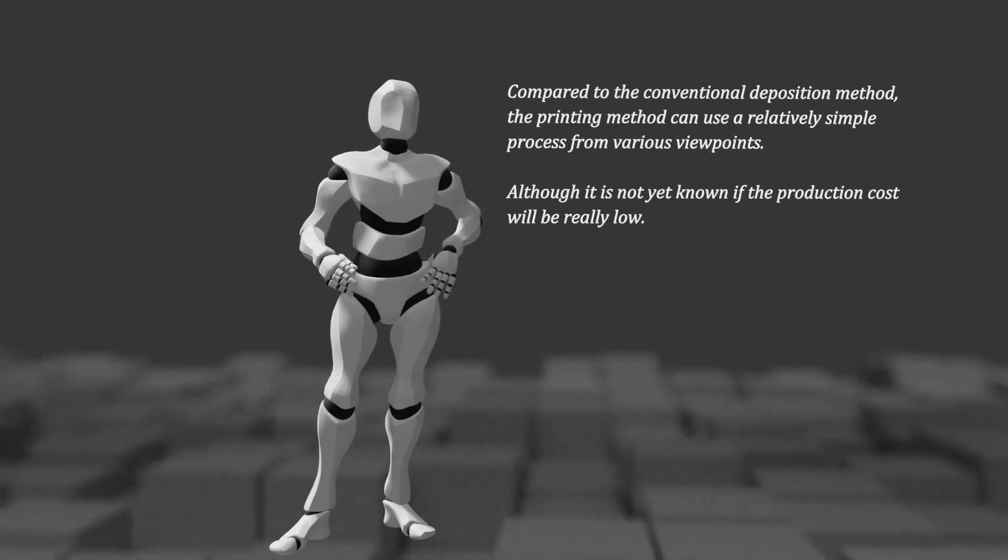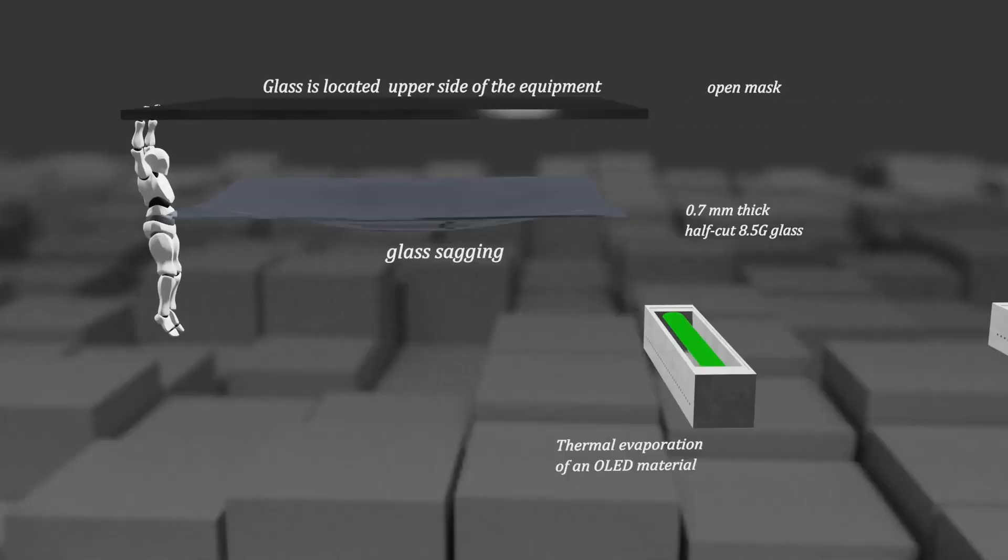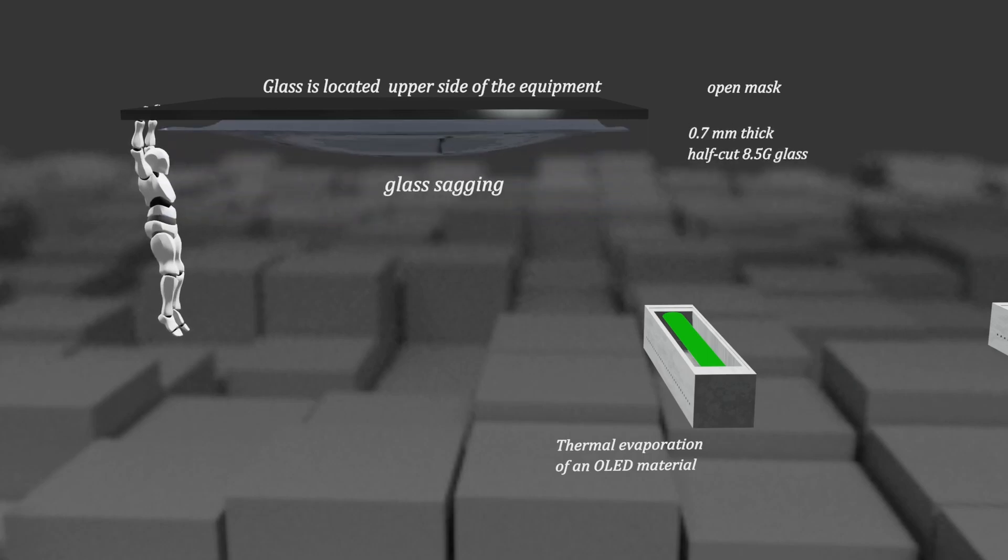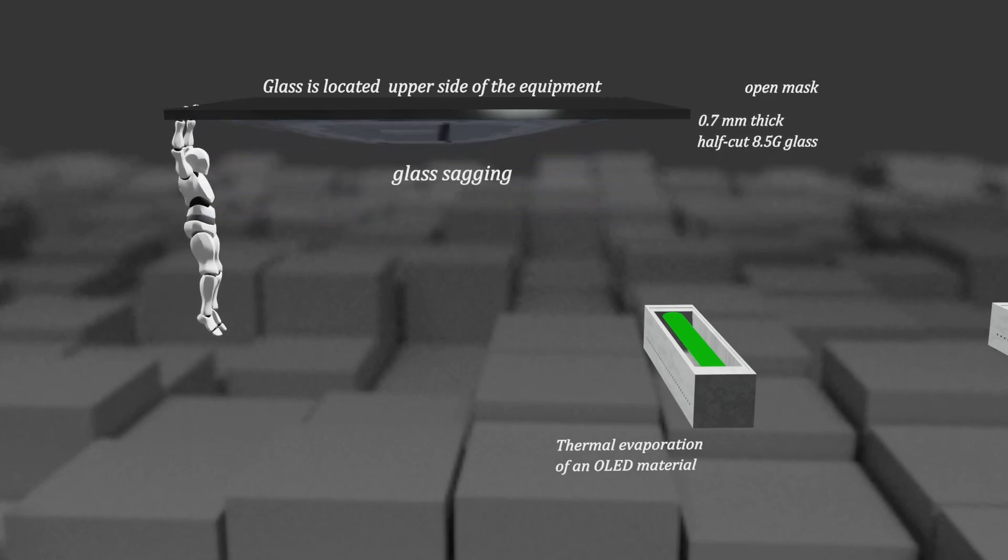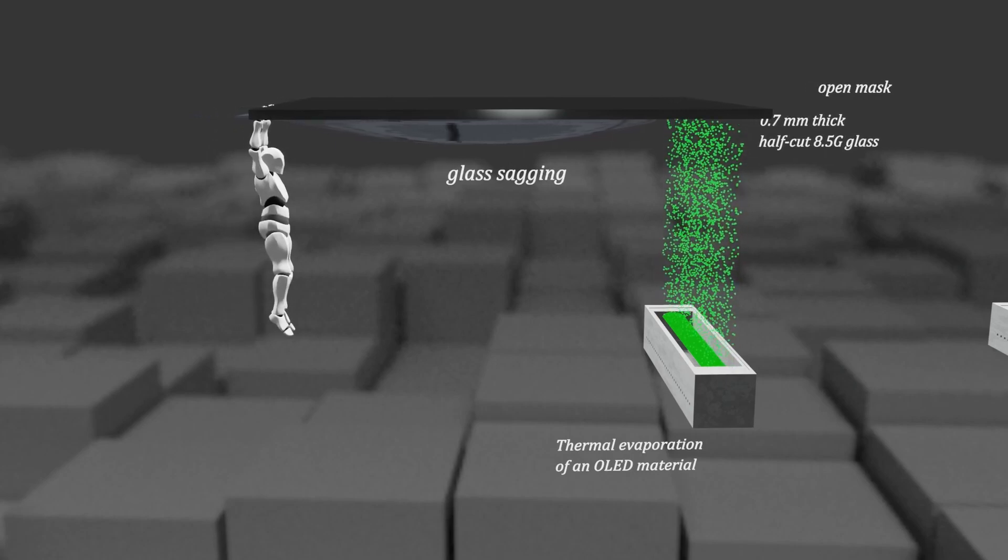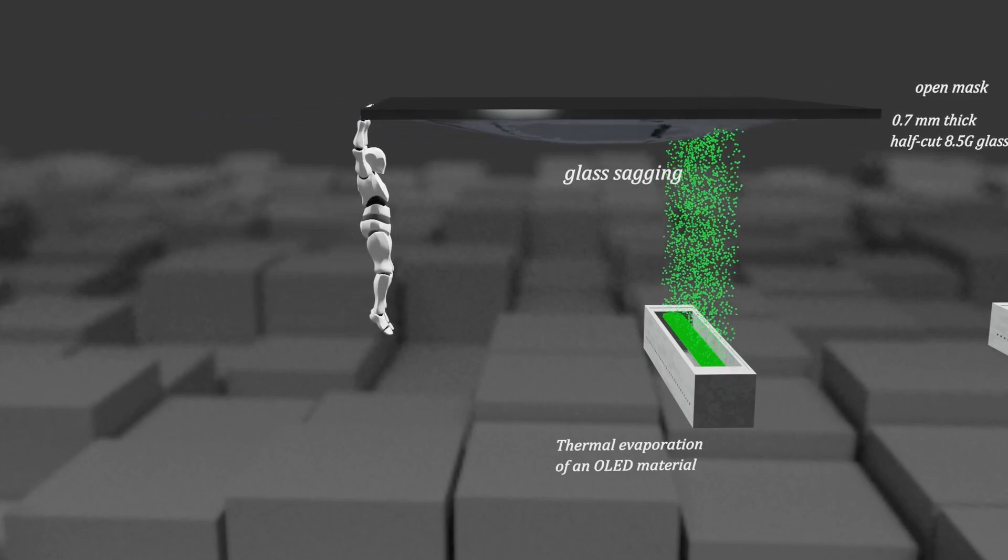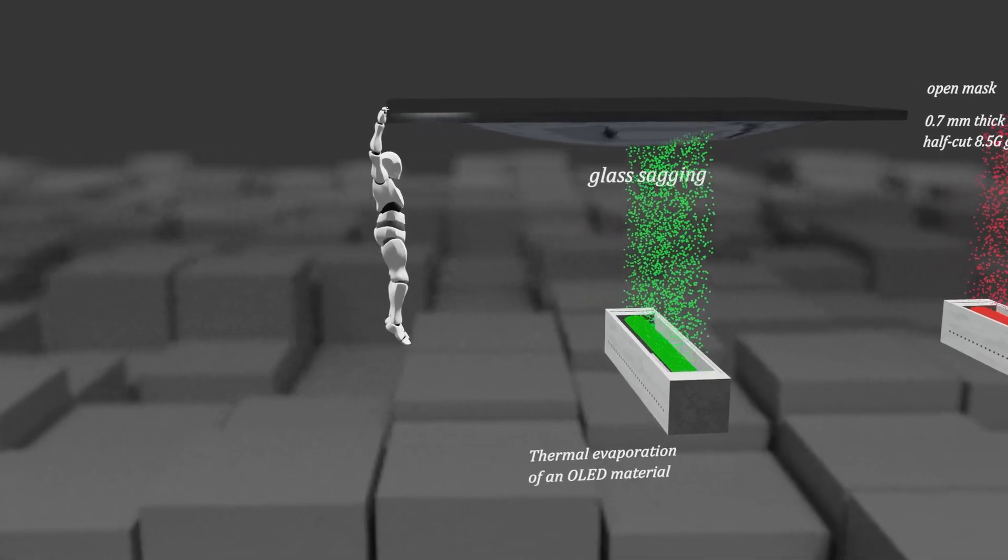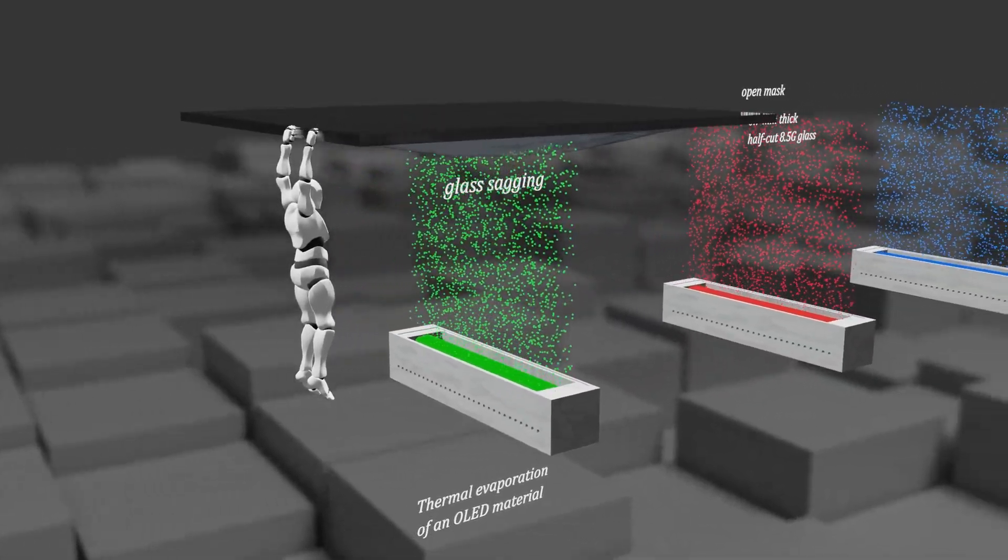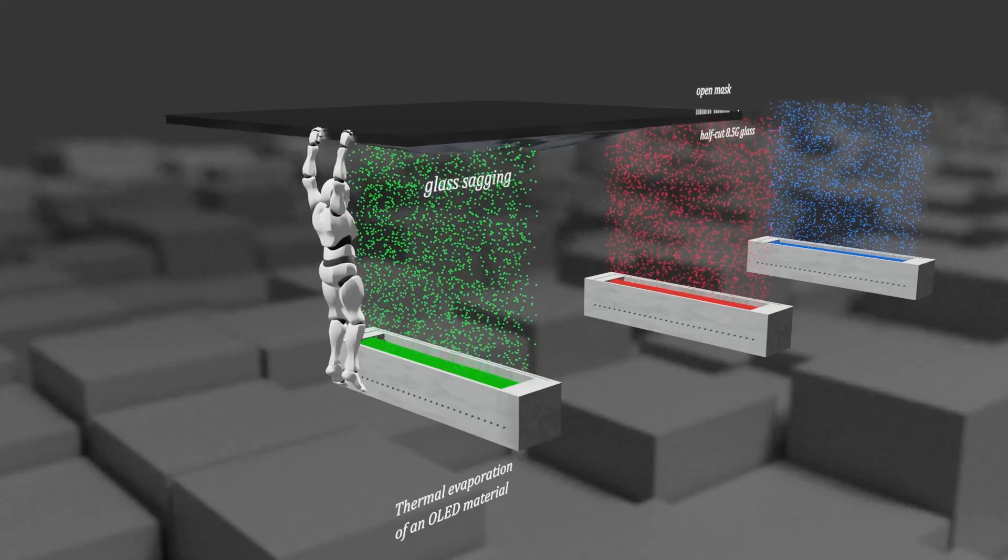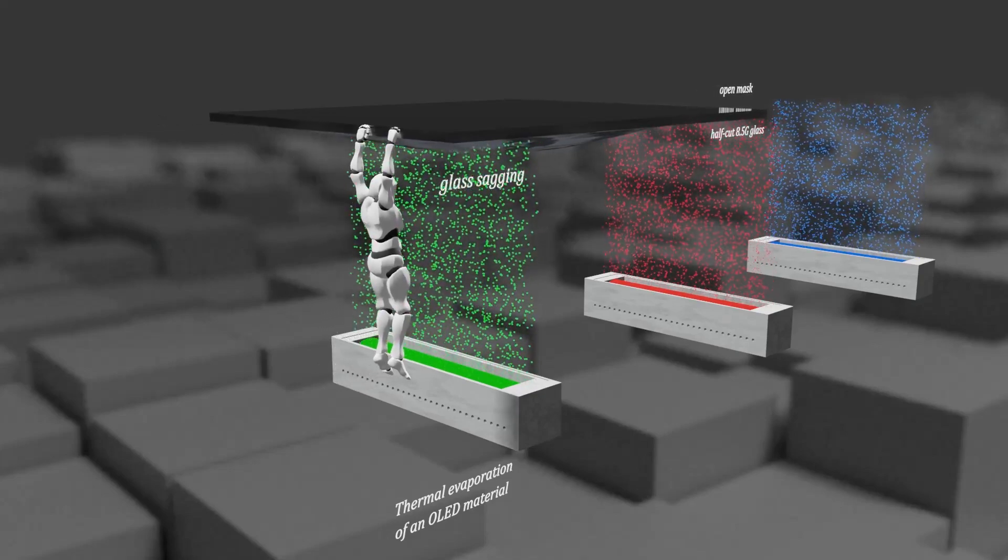Compared to the conventional deposition method, the printing method can use a relatively simple process from various viewpoints. In the deposition process, a large glass substrate is placed on the upper part of the evaporator and deposition proceeds while transferring the substrate. Placing a heavy 8.5 generation substrate on top also causes the glass substrate to sag. If the glass substrate cannot withstand gravity and falls to the floor, the equipment must be stopped for a long time.